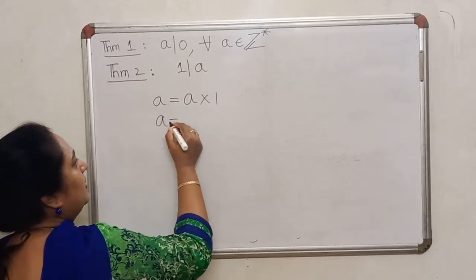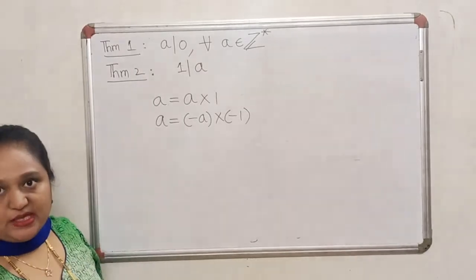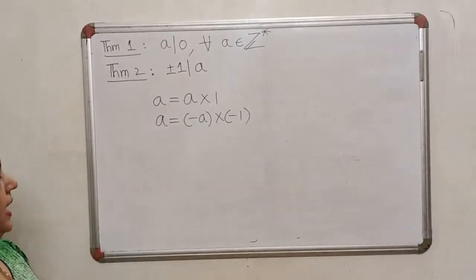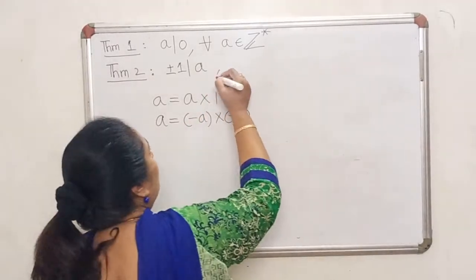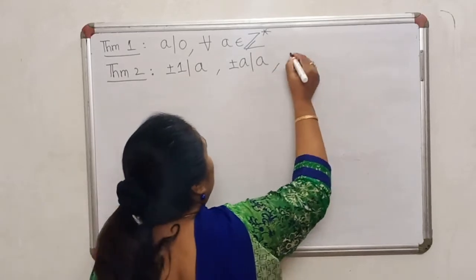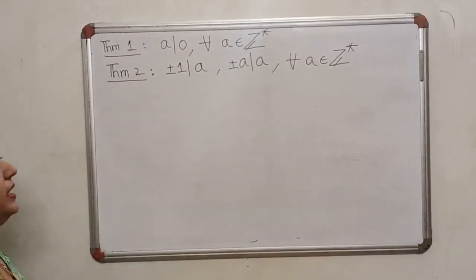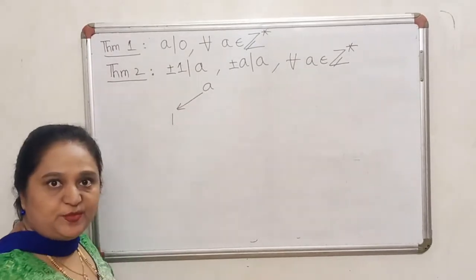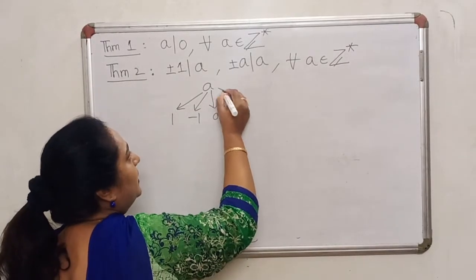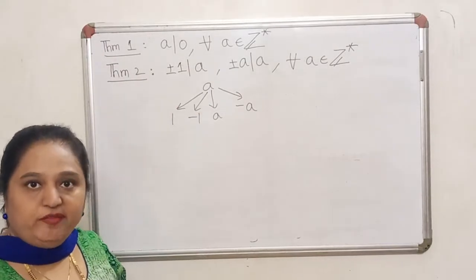I can also say that A can be written as minus A times minus 1. If A is an integer, then minus A is also going to be an integer. So not only does 1 divide A, but minus 1 also divides A. And from the same equations, we can also conclude that A will divide A and minus A will also divide A. This property will be true for every non-zero integer. So for an integer A, 1 will always be a divisor, minus 1 will always be a divisor, A will be a divisor, and so will minus A.